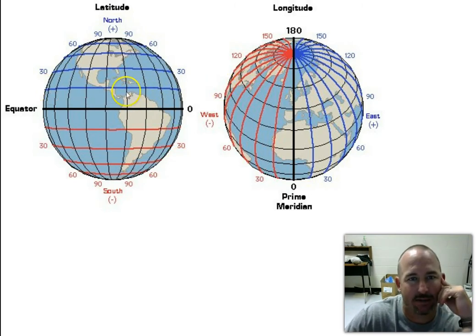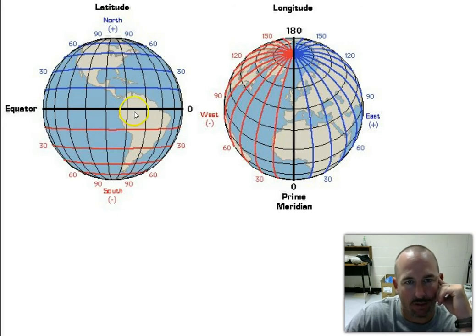Latitude—remember, lat is flat. Lines are parallel to the equator, to the south and to the north. It divides—the equator divides into the northern and southern hemisphere. So make sure you understand that latitude is flat.